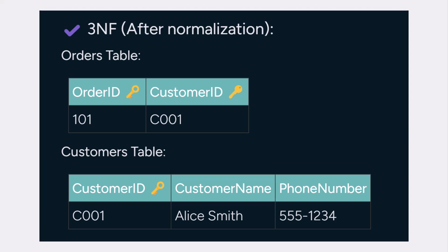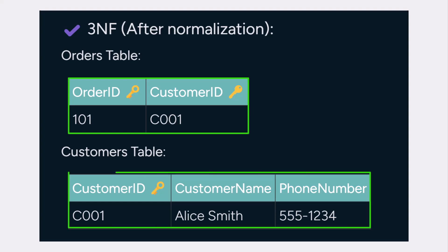The solution? Split the data. One table for orders with order ID and customer ID. Another table for customer info linked by customer ID. Now, each column depends directly on its table's key. It keeps your data clean, avoids duplication, and makes updates much easier.